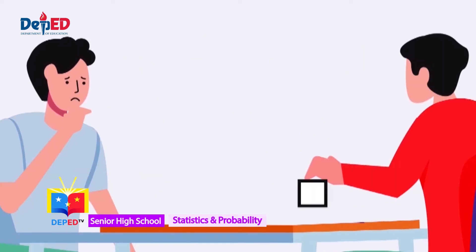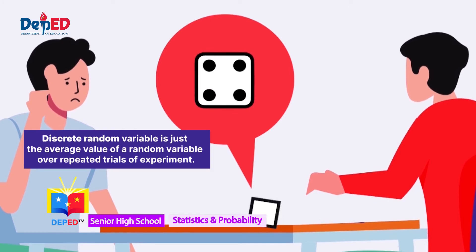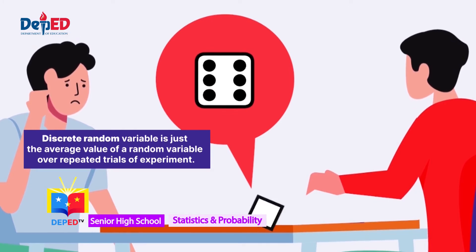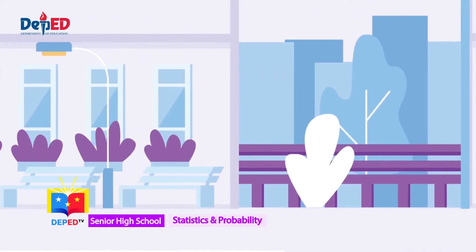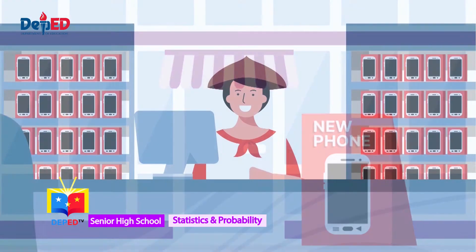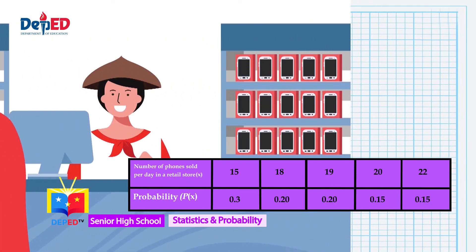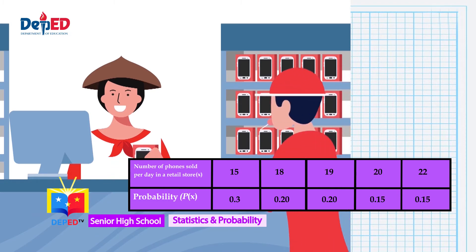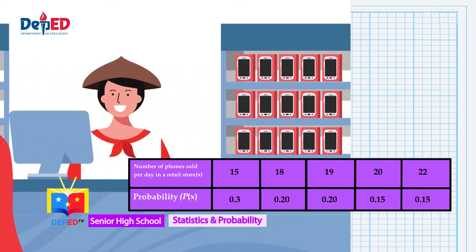So let's have another scenario. The number of cellular phones sold per day at the eCell retail store with the corresponding probabilities is shown in the table. This time, let's compute for the mean, variance, and standard deviation, and try to interpret the result. Are you ready?